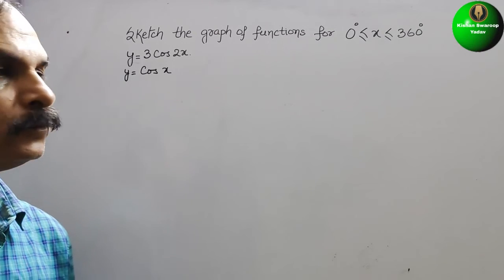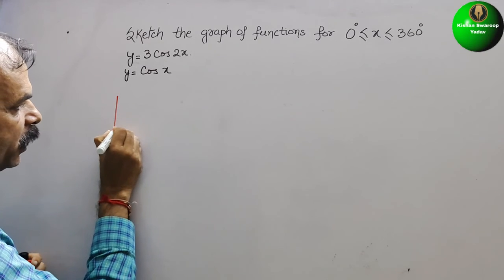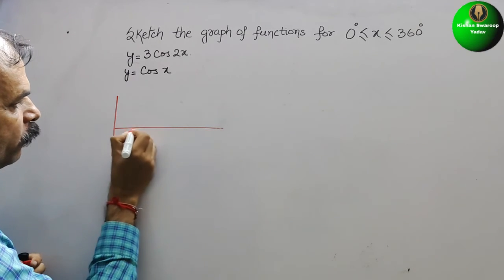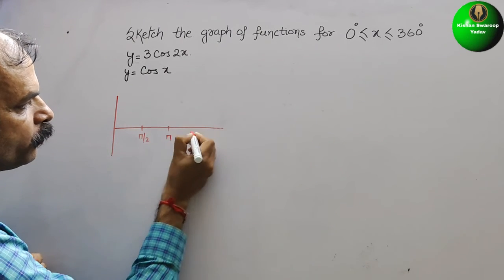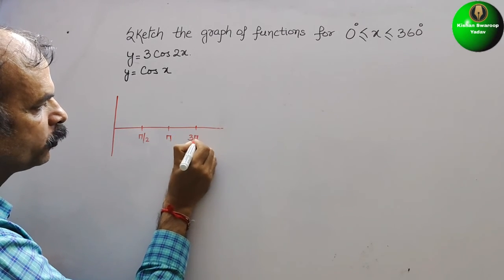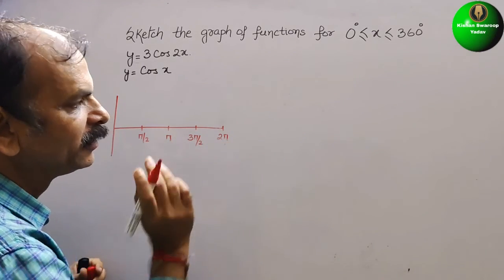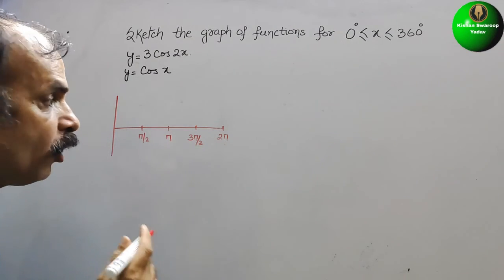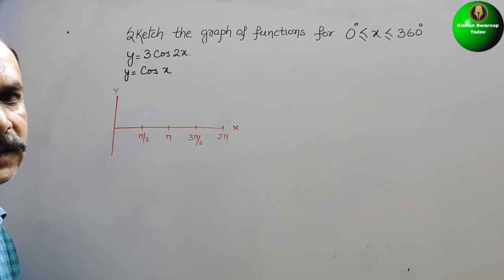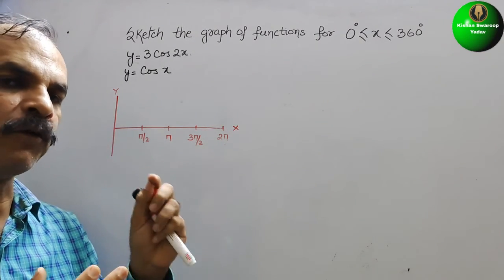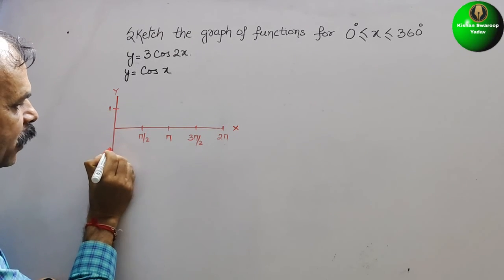So how does the cos graph look? The graph is drawn with the x-axis showing key points: π/2 (90°), π (180°), 3π/2 (270°), and 2π (360°). On the y-axis, we know that cos will vary from 1 to minus 1. So here comes 1 and here comes minus 1.